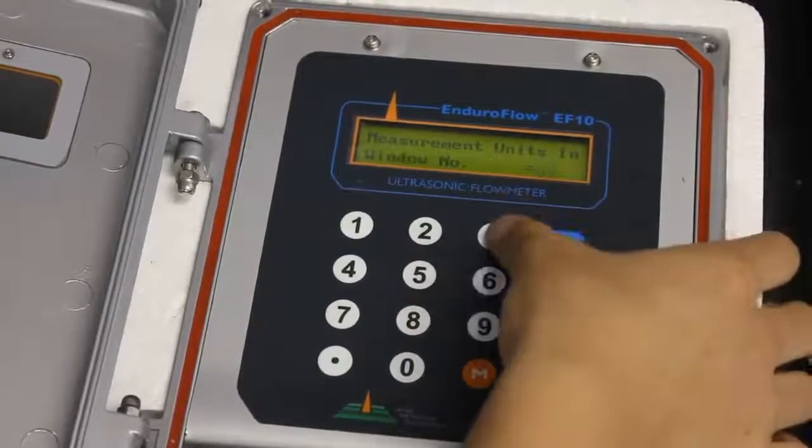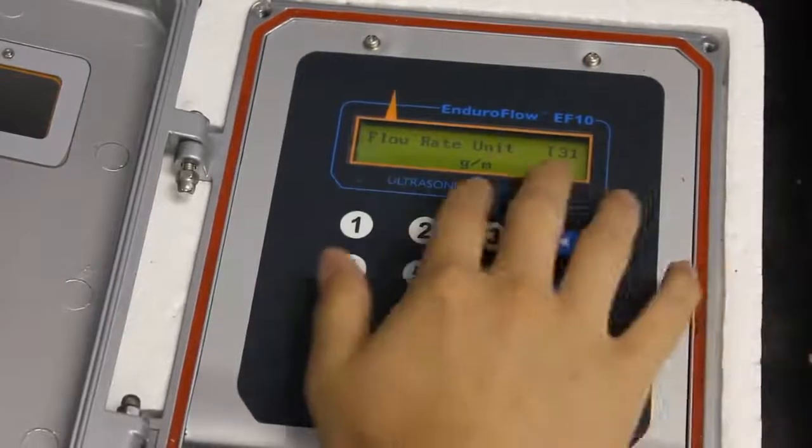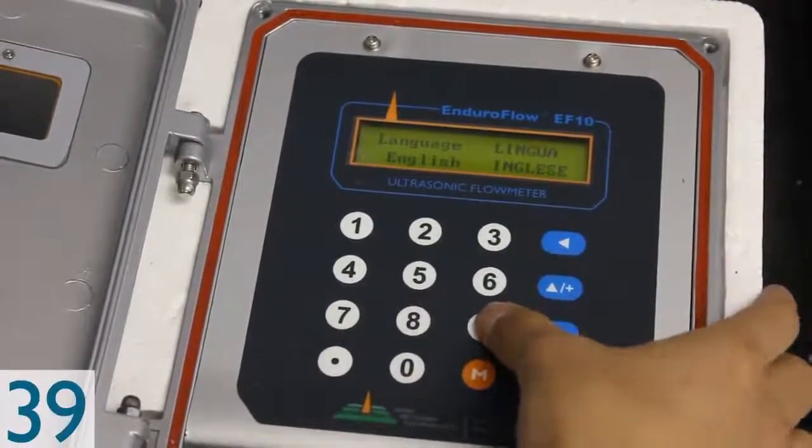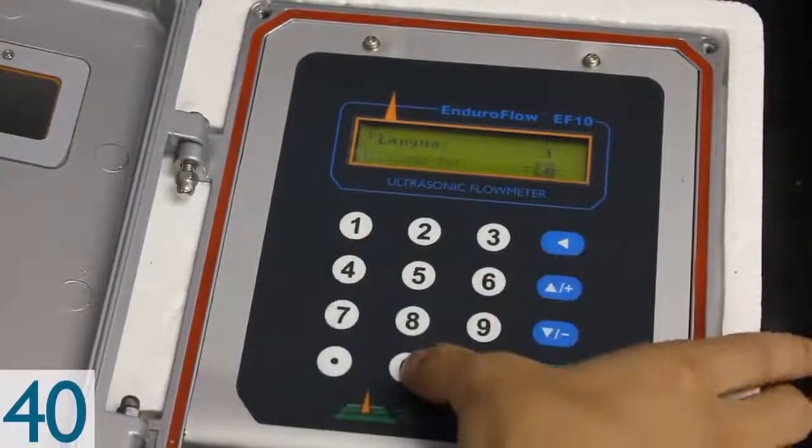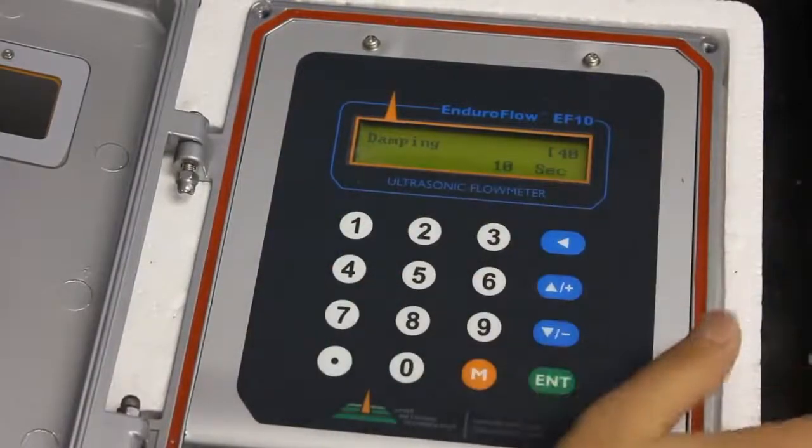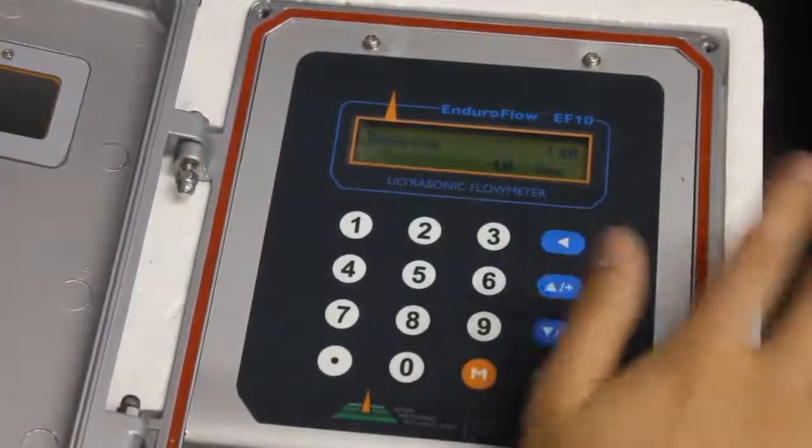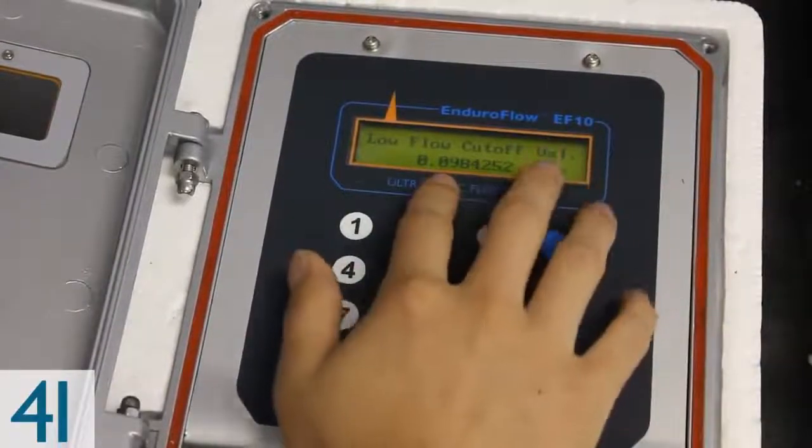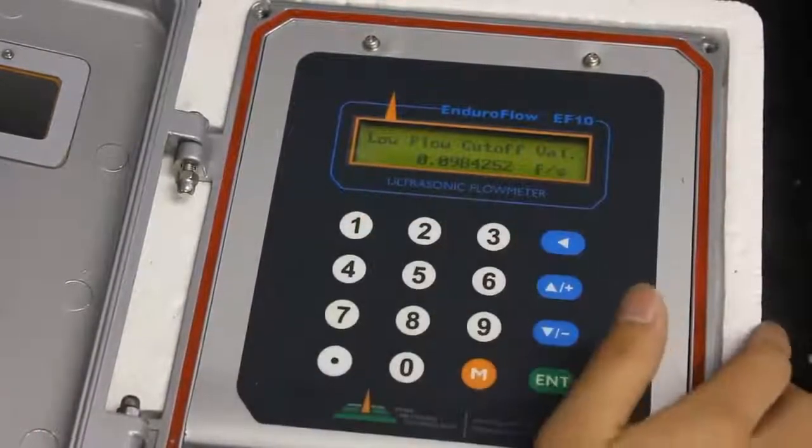Next we go to menu 31 to set the flow rate unit, which is already in gallons per minute here. Then we go to menu 39 to set the language, it's already in English. Next we go to menu 40 to set the damping. You can do 10 seconds or 20 seconds, both are fine. This basically takes average of the flow over this amount of time. Next we go to menu 41. This is a low cutoff valve. We already calibrate them to the factory standard here so you don't need to worry about that.